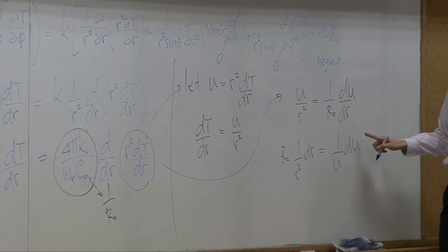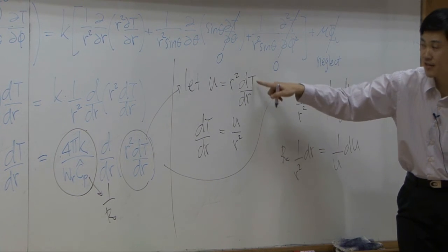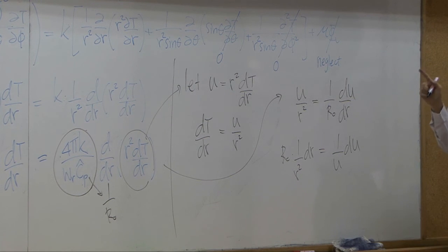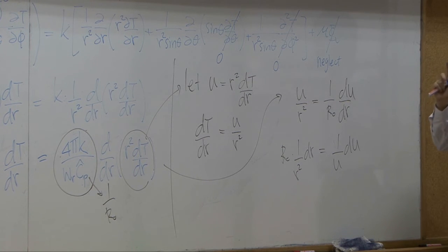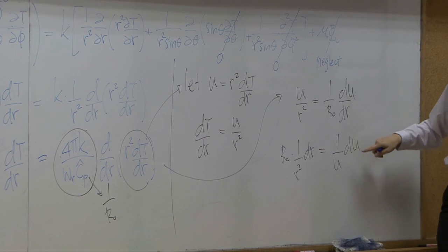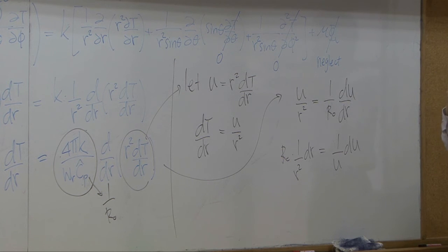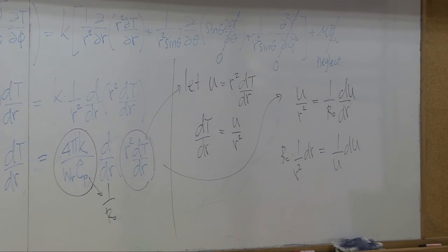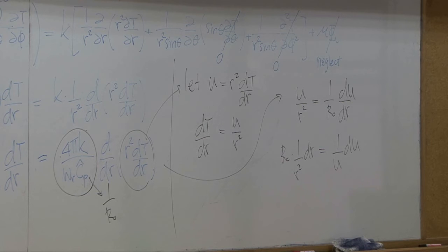Once you integrate once, you get u. Replace u back with dT/dr, then integrate again to get the temperature profile. Since you do two steps of integration, you end up with two integration constants. That means you need two boundary conditions with respect to temperature: the inside temperature T_k and the outside temperature T0. After that, it's just mathematics.